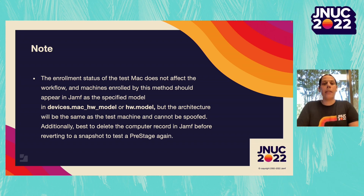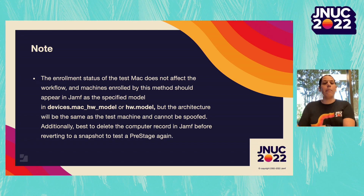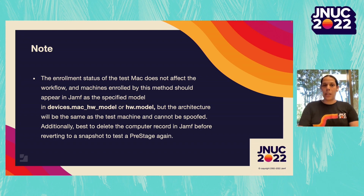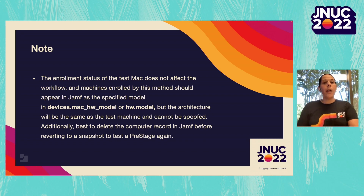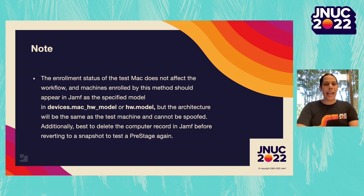A couple of things to keep in mind. Enrollment status of the test Mac does not affect the workflow. The machines enrolled by this workflow should appear in Jamf as a specified model in the device hardware model. But the architecture will be the same as the test machine, meaning an Intel Mac cannot spoof an M1 computer. Additionally, it will be best to delete the computer record in Jamf each time when you're reverting back to a pre-stage to test again.